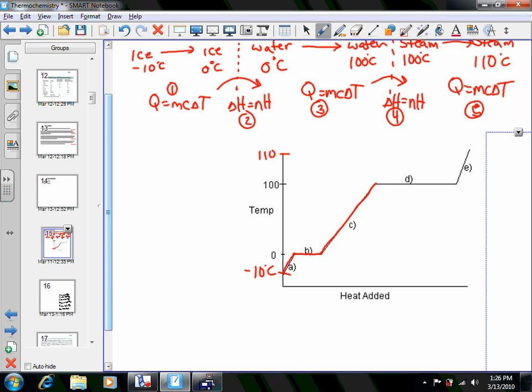Then it's all water at zero, heats all the way up to water at a hundred. Water at a hundred changing to steam. Then steam at a hundred would go up to steam of 110. So you've got A, B, C, D, E corresponding to the numbers one to five as the steps up there.